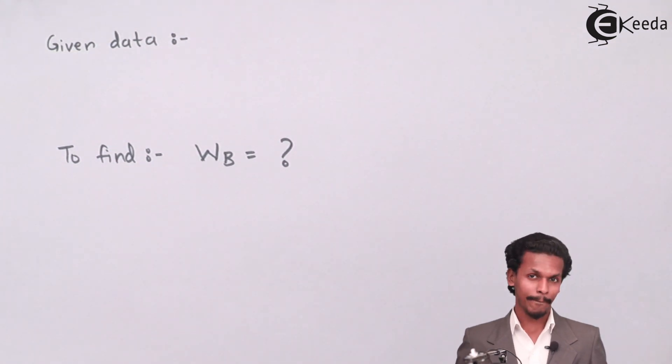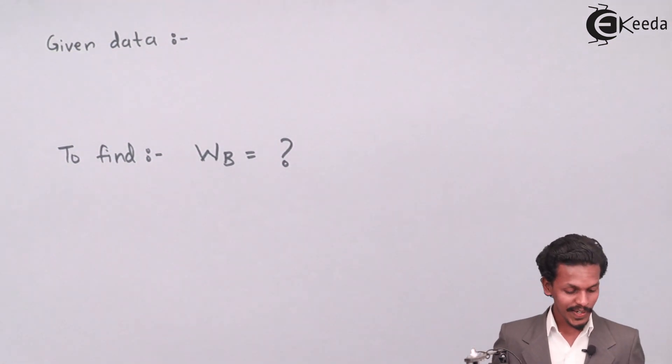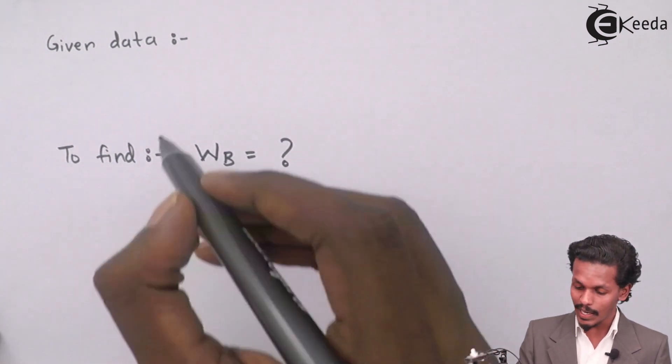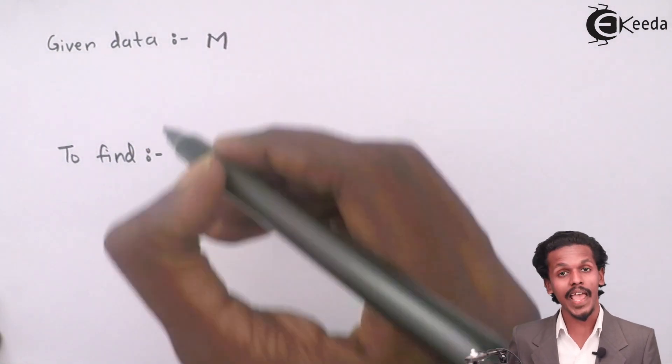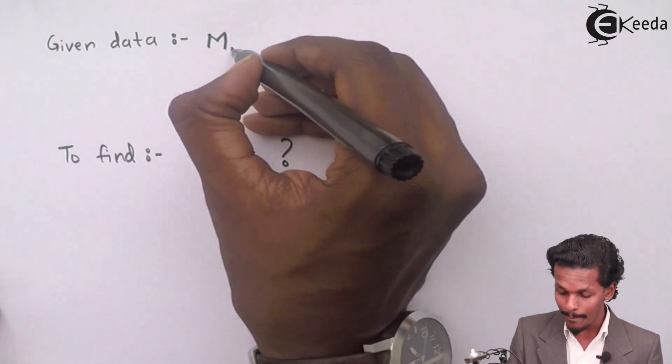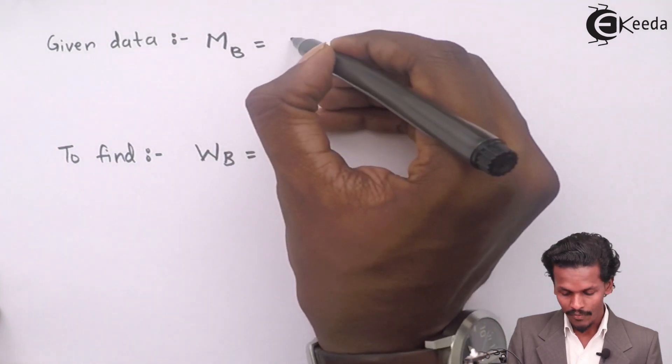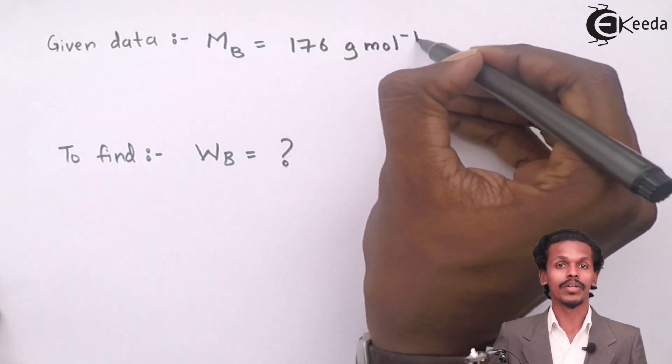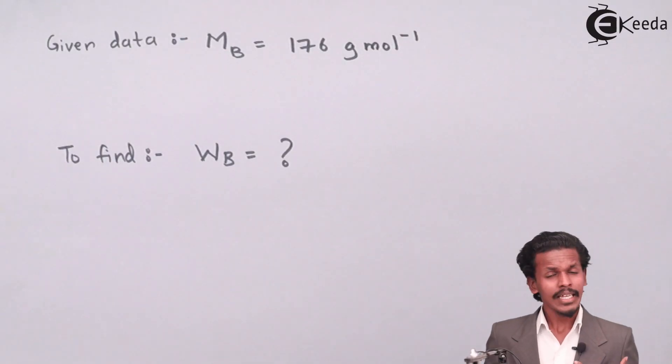This is what we have to find. The given data includes the molar mass of ascorbic acid. I would name it as M which stands for molar mass. For solute, MB is given as 176 gram per mole, and the weight of the solvent, that is acetic acid.